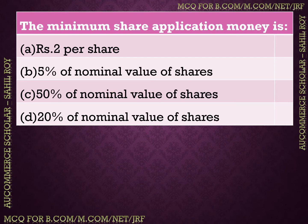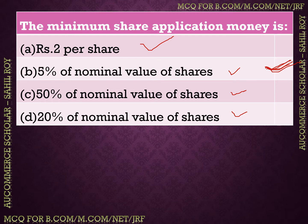The next question: What is the share application money? When you buy shares, the total payment includes application money, allotment money, first call, and final call. In the primary market or during an initial public offering, you pay the whole amount at once. However, in accounting the minimum share application money is at least 5% of the nominal value of shares.